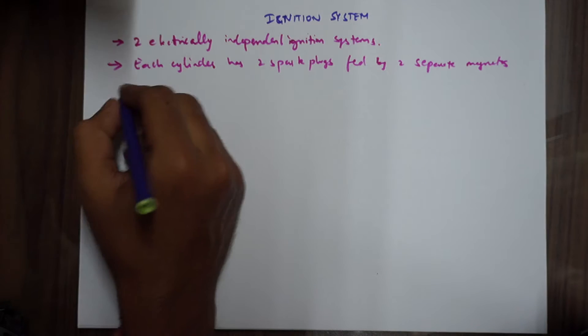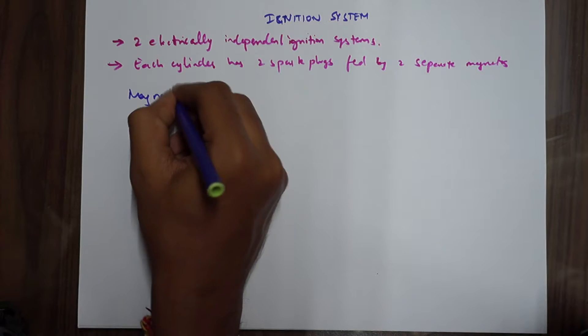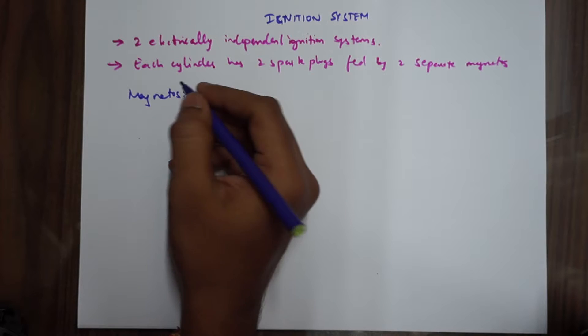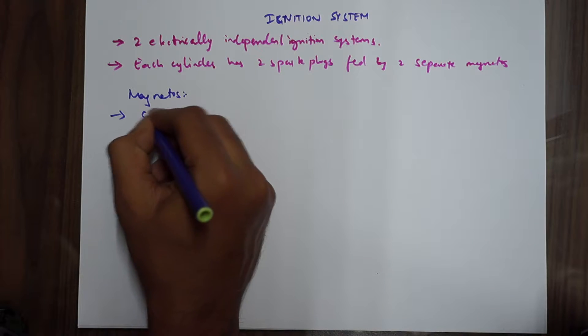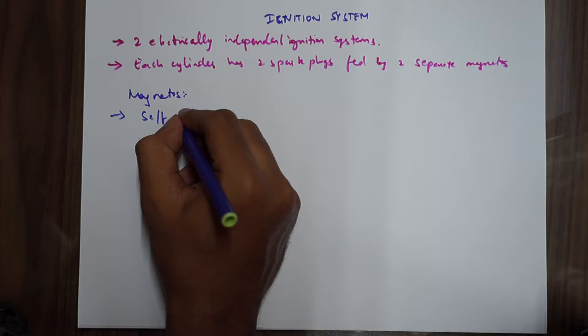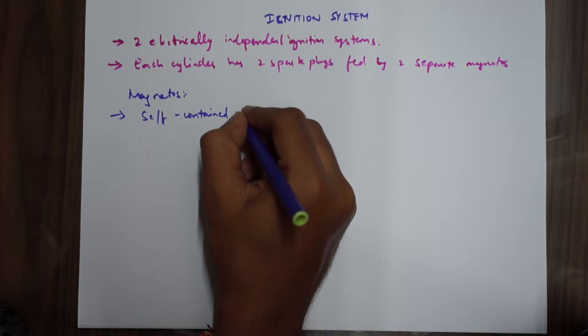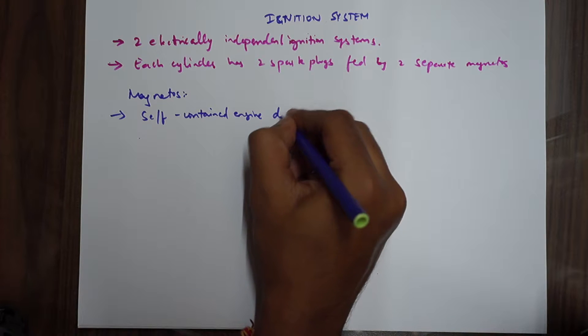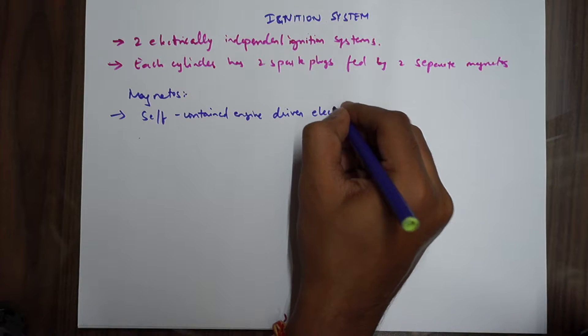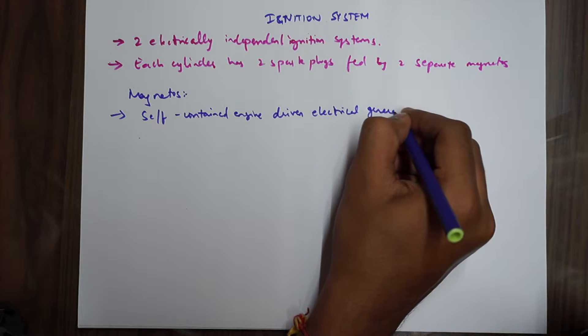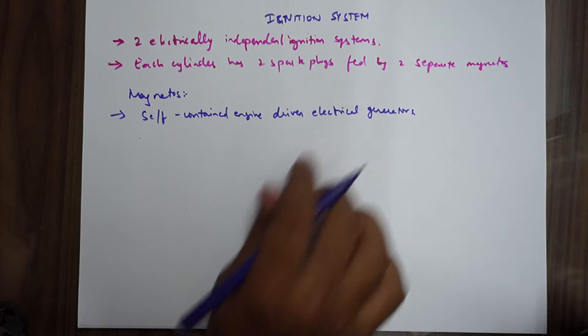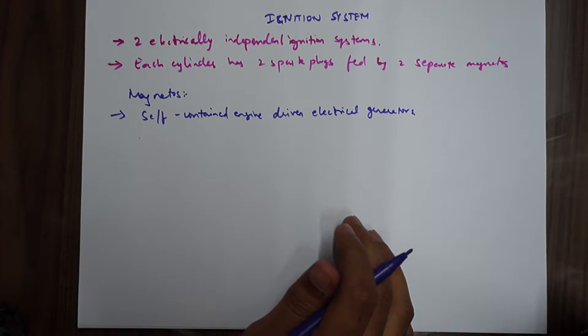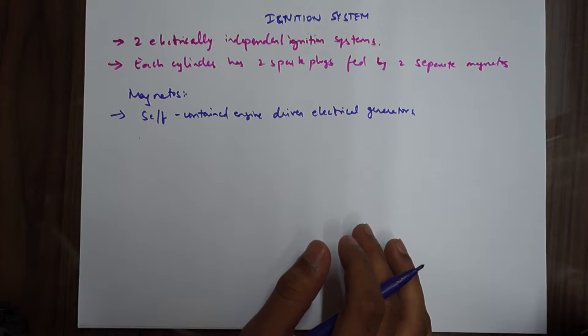Let's discuss about the magnetos as well. Magnetos are self-contained engine driven electrical generators. They produce a series of extra high tension voltage electrical sparks at the spark plugs and the distributor puts them into firing order. EHT is called your extra high tension.